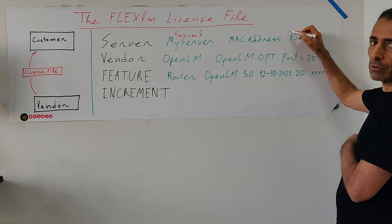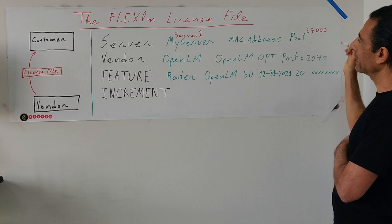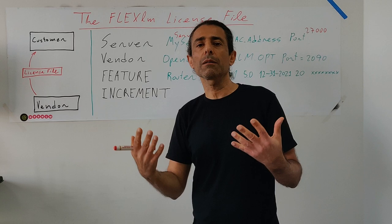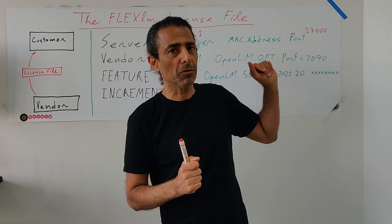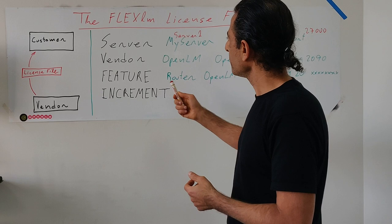Then we have the port — traditionally you will see a specific number, but it can be any number. In FlexLM there are two ports: one is the FlexLM port, and the second is the vendor port. We'll see how that works. That was the server line.